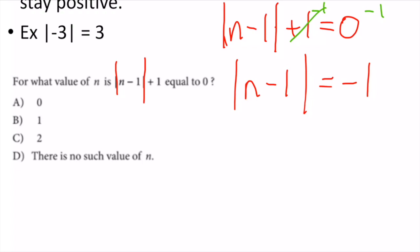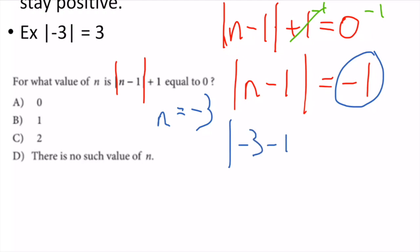This can never work because the absolute value of anything must be a positive number. |n - 1| has to be positive, and -1 is not positive. No matter what value of n I put in, I can never get -1. Say I put in n = -3: |-3 - 1| = |-4| = positive 4. So the answer is D — there is no such value of n.